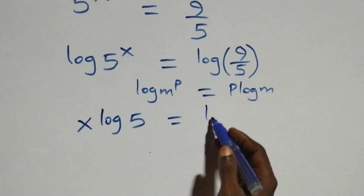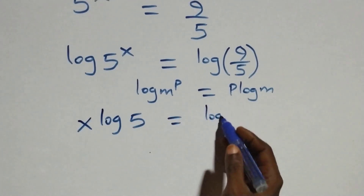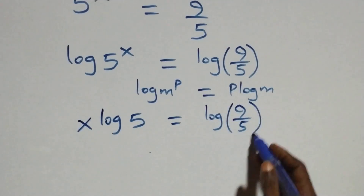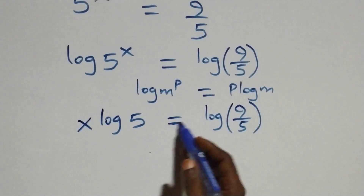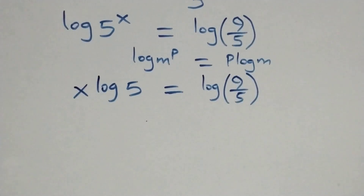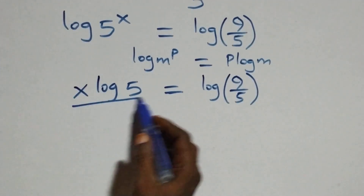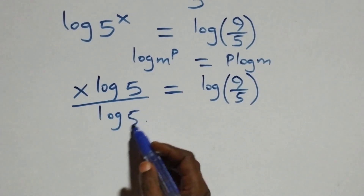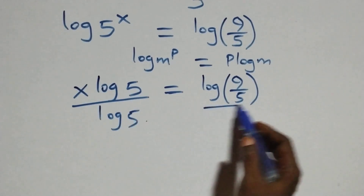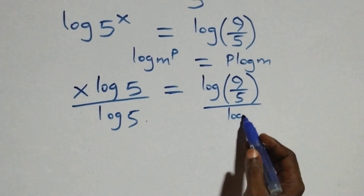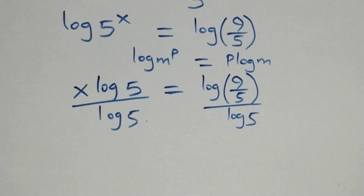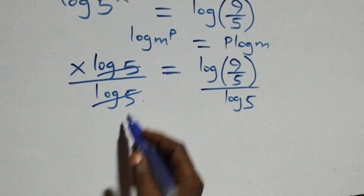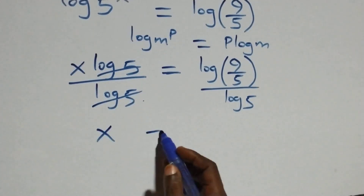The next step: we divide both sides by log 5. On the left side, log 5 cancels, leaving x.